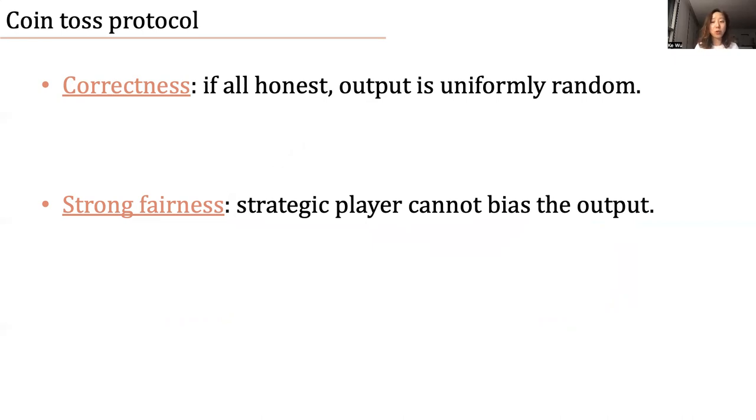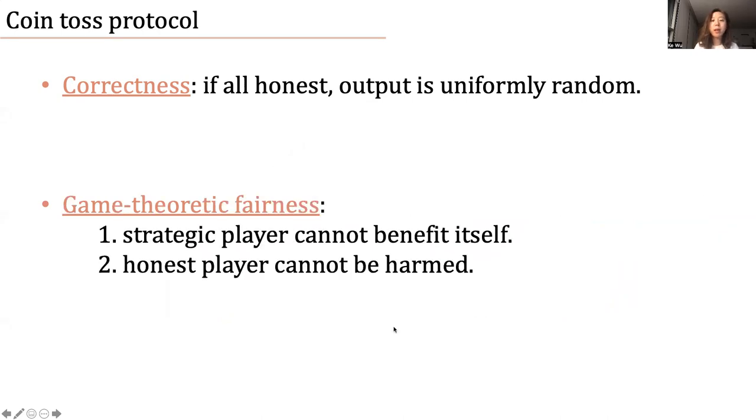Unfortunately, this is proven to be impossible against more than half-sized coalition by Cleve in 1986. But we just saw that Blom's coin toss protocol achieves some fairness, which is more of a game theory flavor. It guarantees that a strategic player cannot benefit itself by deviating from the protocol, nor can it harm an honest individual.